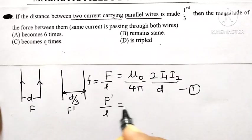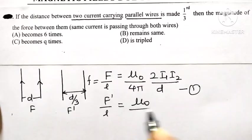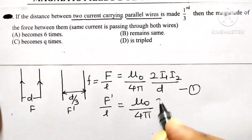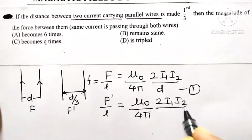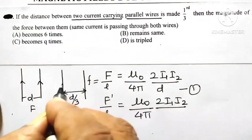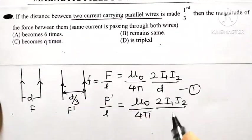is equal to μ₀ divided by 4π, there is no change in current, 2I₁I₂. Same current is flowing through the two conductors, I₁ and I₂ are the current. But that distance is reduced to d by 3.